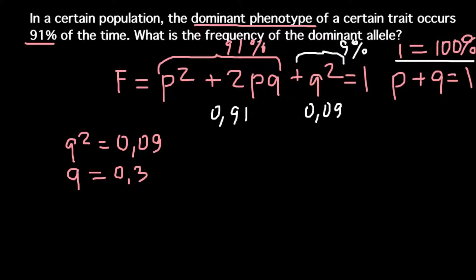Now according to this formula, if we know q, we can find p. So 1 minus 0.3 gives us 0.7.